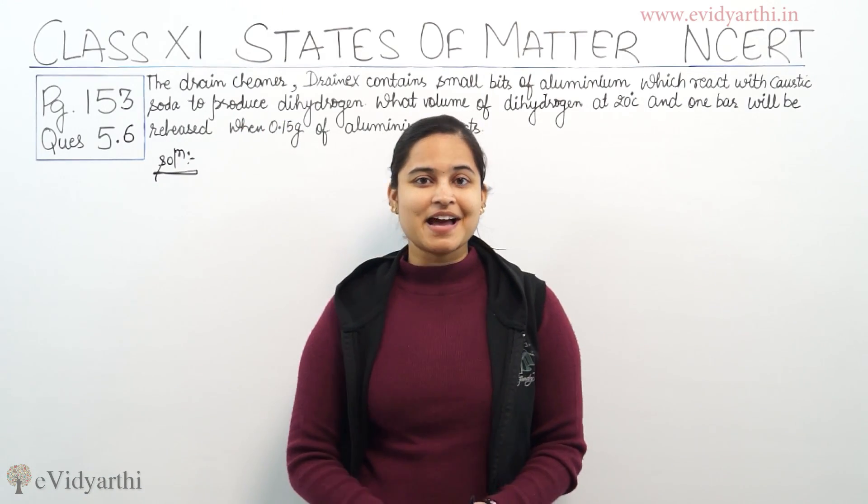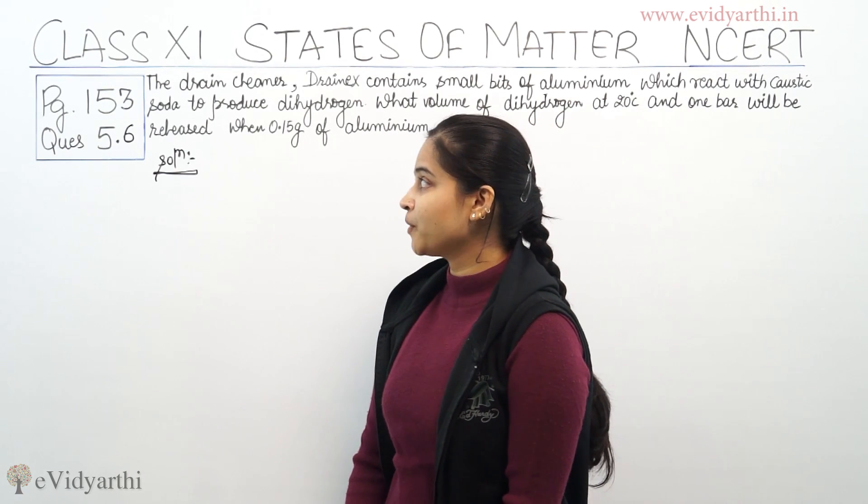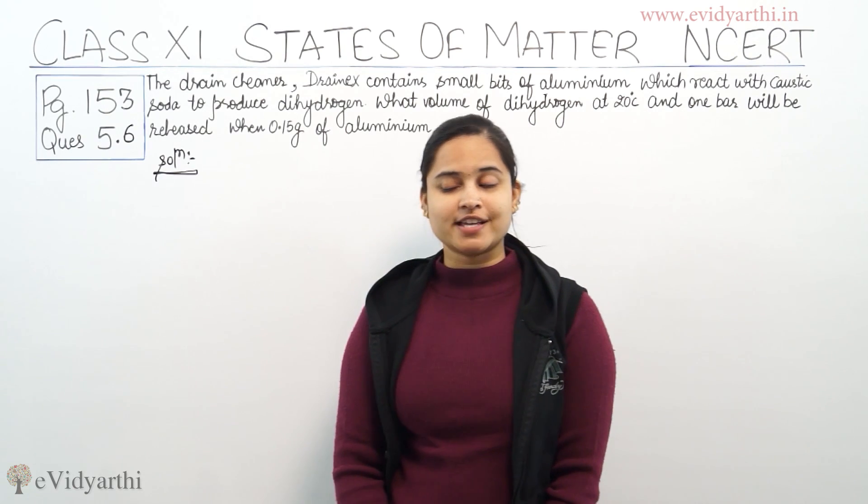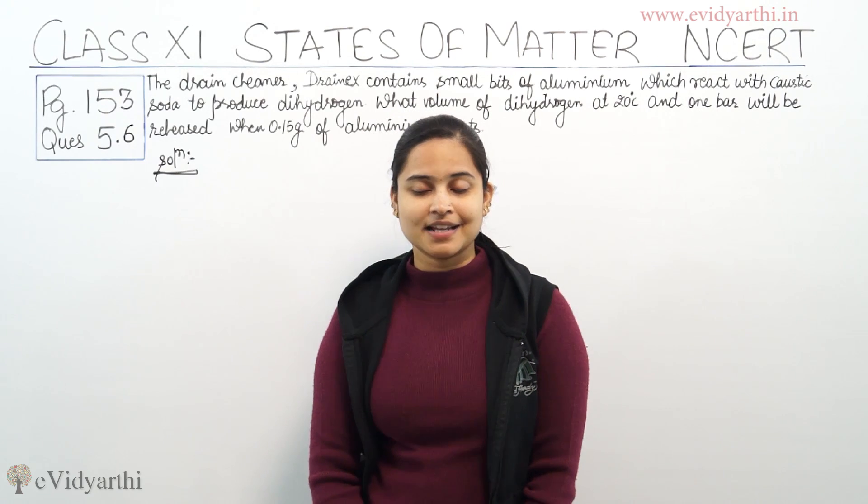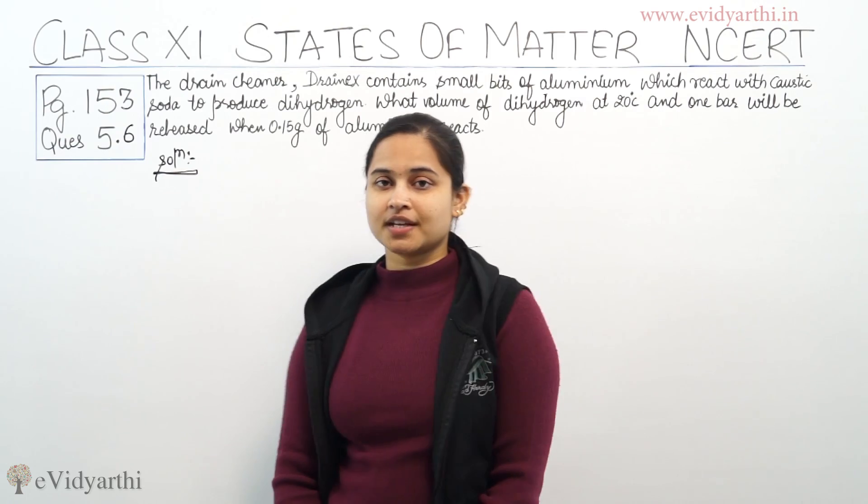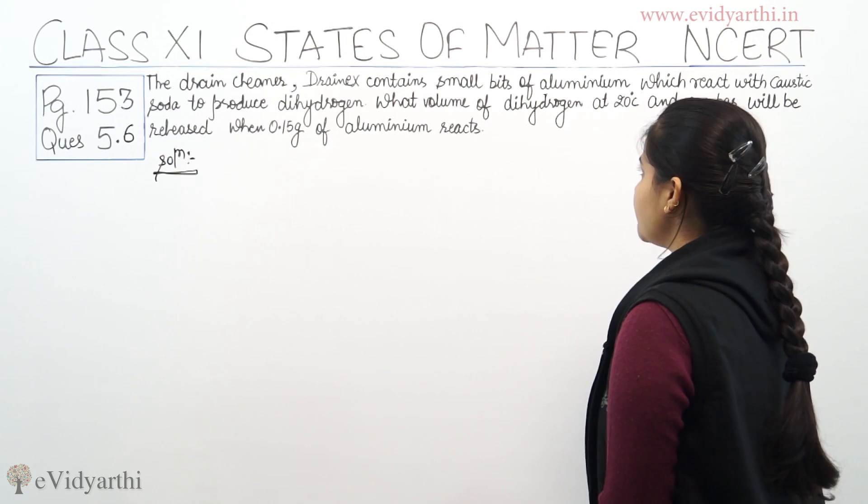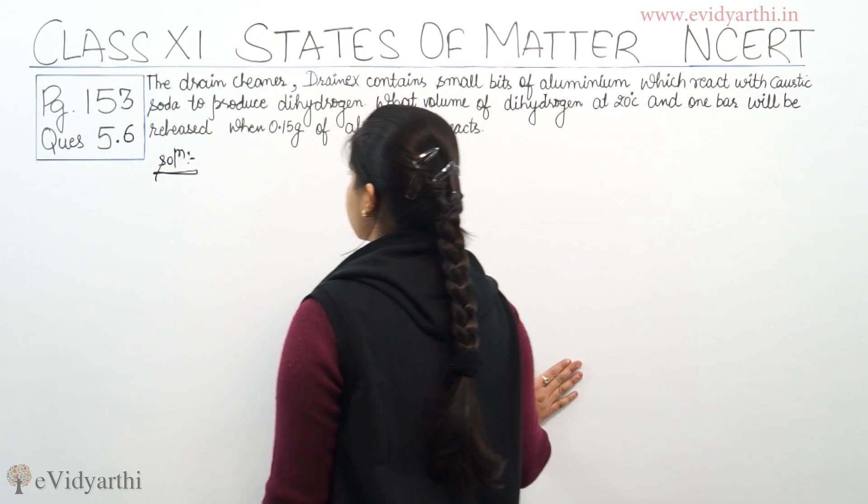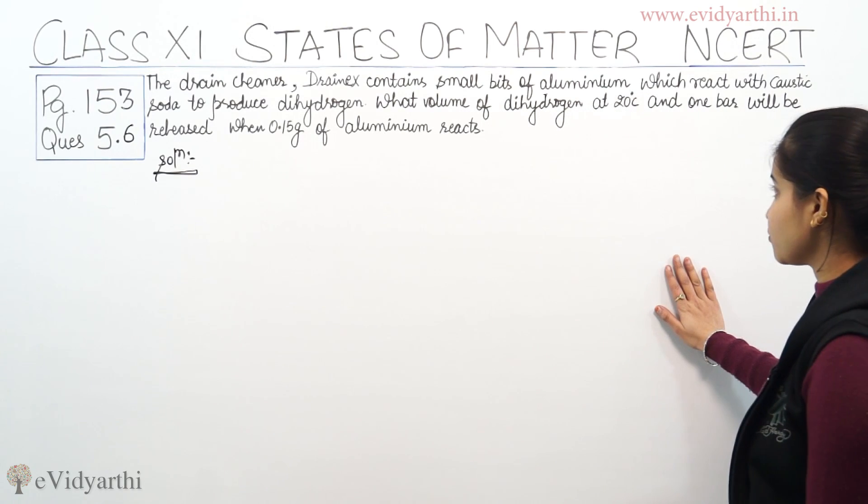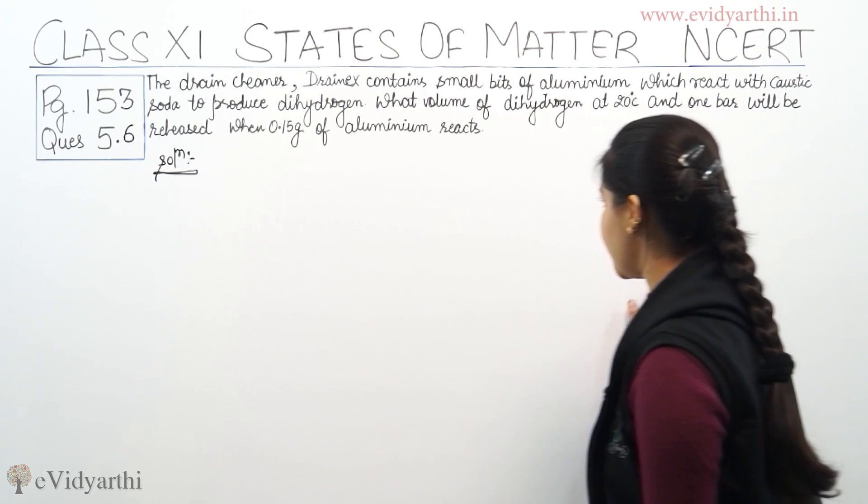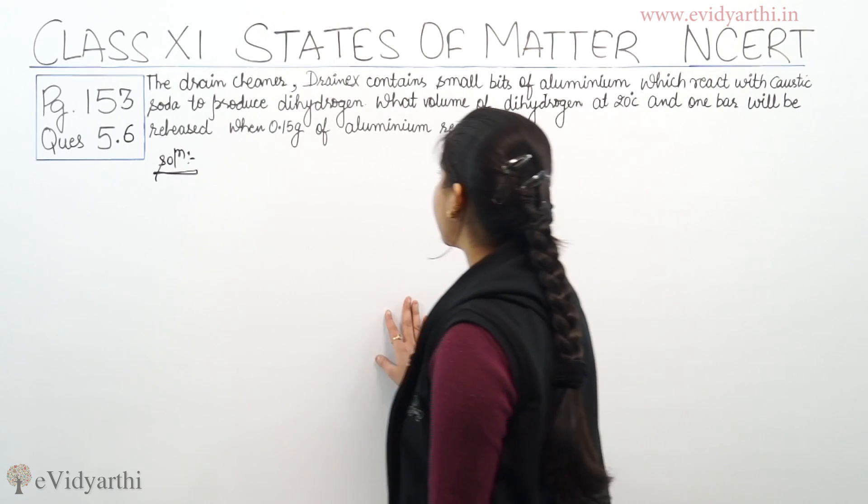Hello everyone, I am Rakhi and today in this session, I am going to discuss with you question number 5.6 on page number 153 of NCERT text, chapter number 5 states of matter class 11. So what is the question? The drain cleaner contains small bits of aluminium which react with caustic soda to produce dihydrogen.